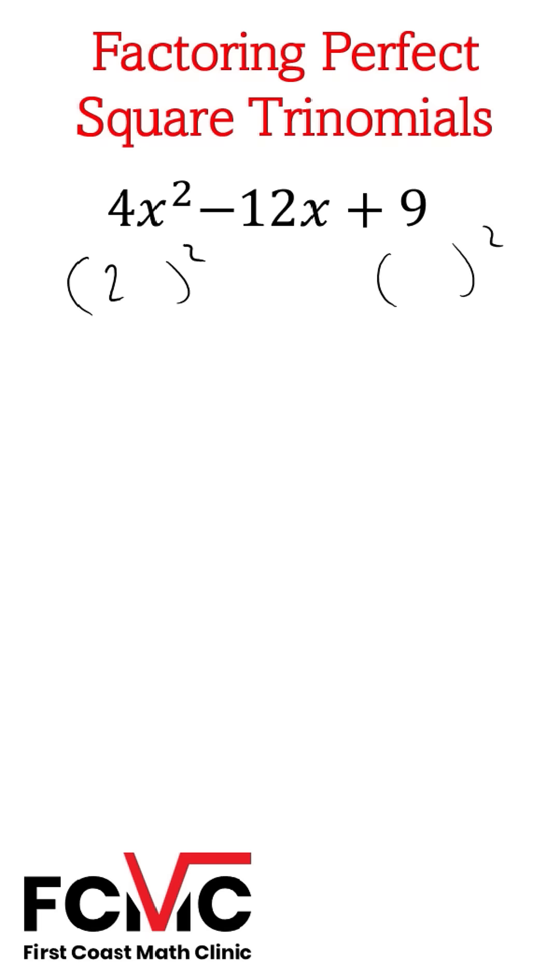So what can we square to get 4x squared? Well, we can square 2x, that's going to be our a squared. What can we square to get 9? We can square 3, that's going to be our b squared.